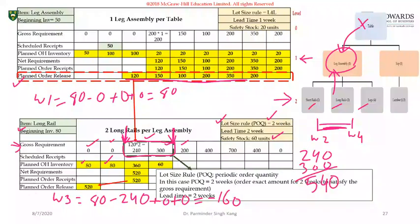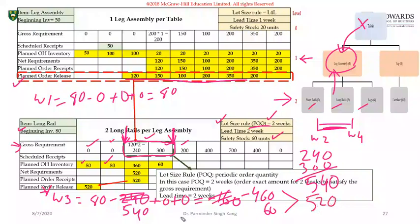We need to redo the calculation: the gross requirement for the next two weeks is 540 units. Based on this, we need 460 more units plus 60 units for safety stock, so in total we need to order 520 units — that's why the net requirement is 520. This covers 300 units for week four demand, 160 units for week two demand, and 60 units to keep as safety stock. Therefore, the planned order receipt for week two is 520 units.